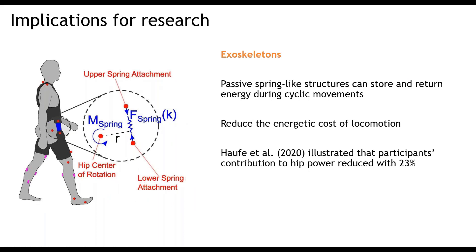And lastly, this knowledge can be and has already been used in exoskeleton research. Similar to the IFL, passive spring-like structures can store and return energy during cyclic movements. Implementing these in an exoskeleton can reduce the energetic cost of locomotion. One study of 2020 implemented a spring anteriorly across the hip joint in an exoskeleton. They found that the participant's contribution to hip power for hip flexion was reduced with 23%.